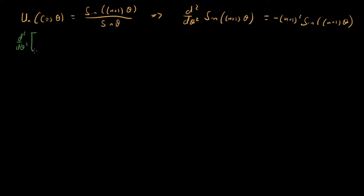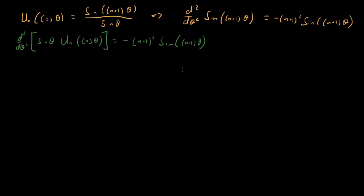We can plug in our Chebyshev polynomial using the definition. What we get is the stated derivative of sine theta times U_n of cosine theta — because sine of (n+1) theta equals the product of those two — equals minus (n+1)-squared times sine of (n+1) theta. Now let's do the same change of variables: cosine theta equals x. So d/d-theta becomes plus-or-minus root one-minus-x-squared times d/dx.